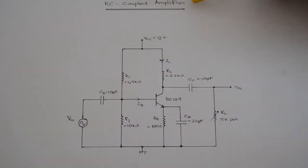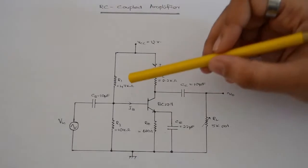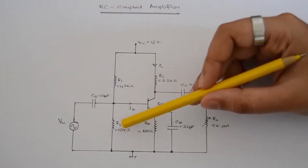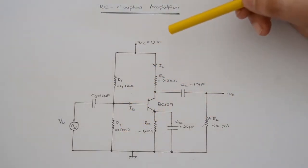This is the circuit of RC Coupled Amplifier. Resistors R1 and R2 are employed for voltage divider bias of the transistor. It provides good stabilization independent of beta and temperature.